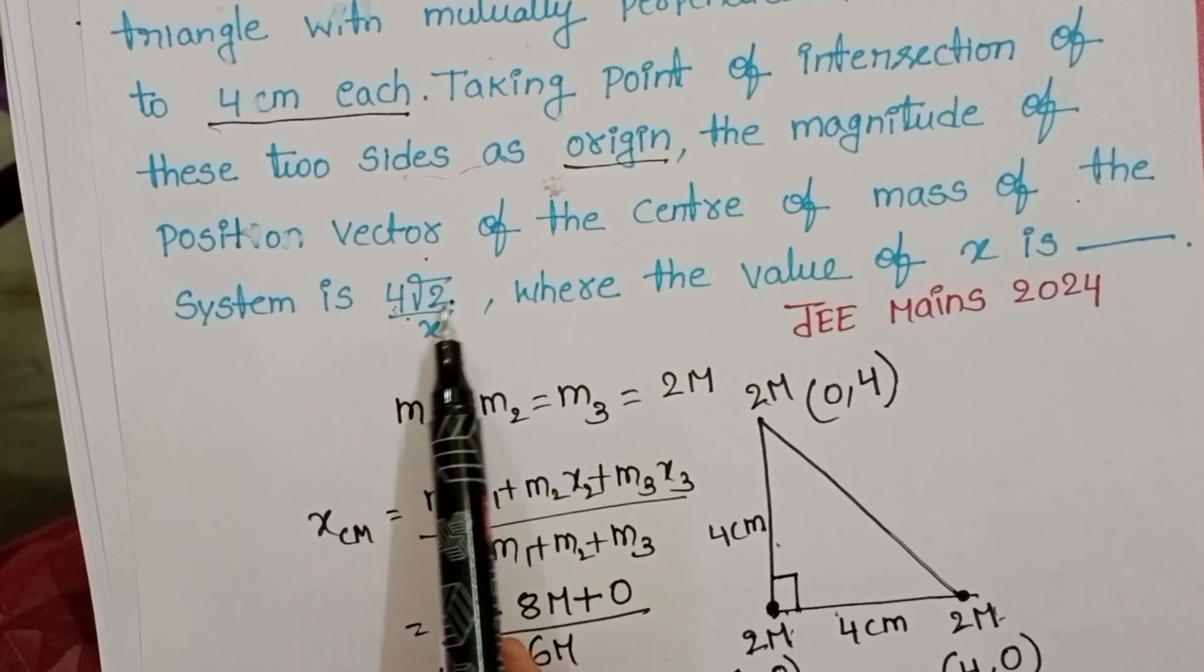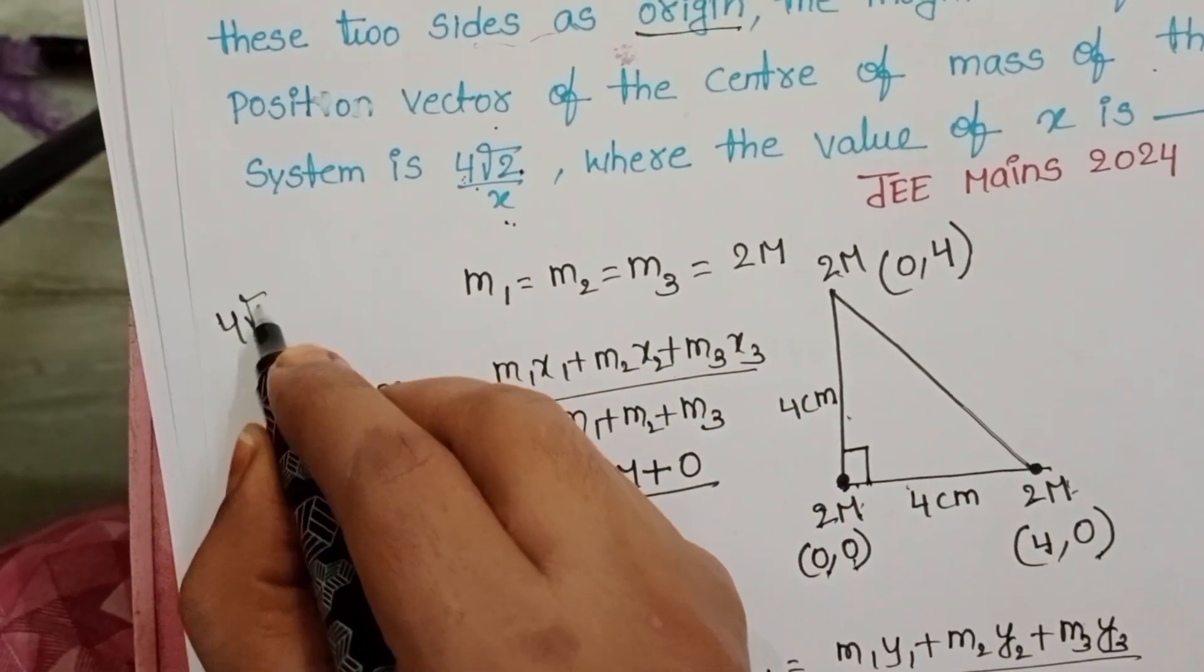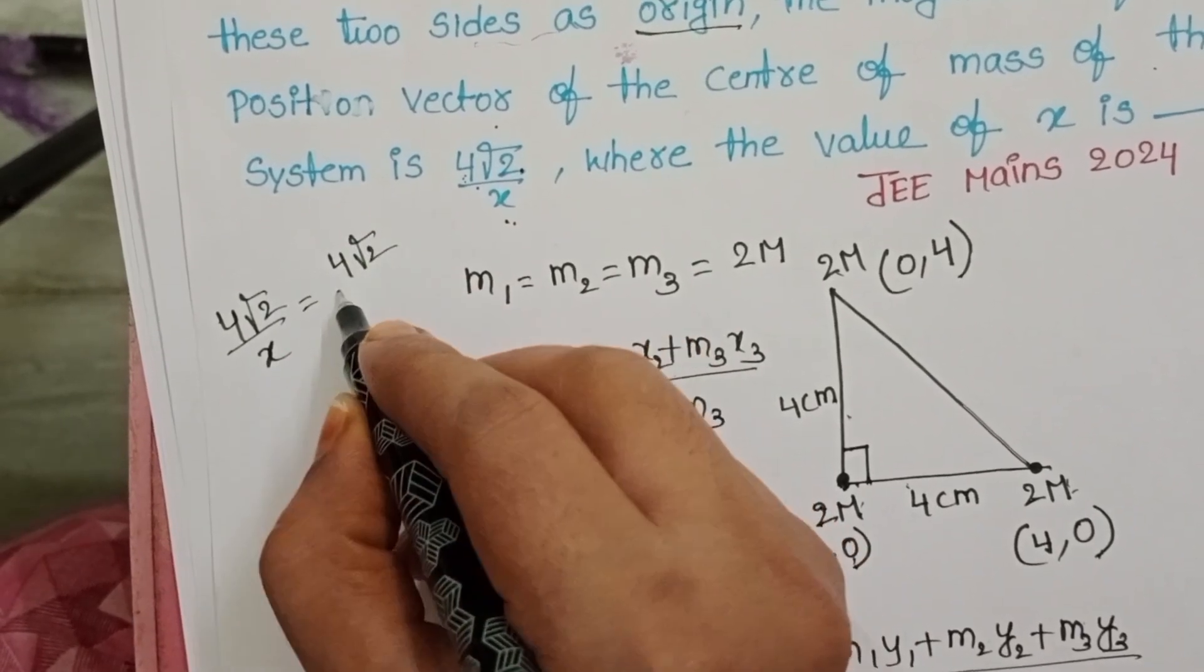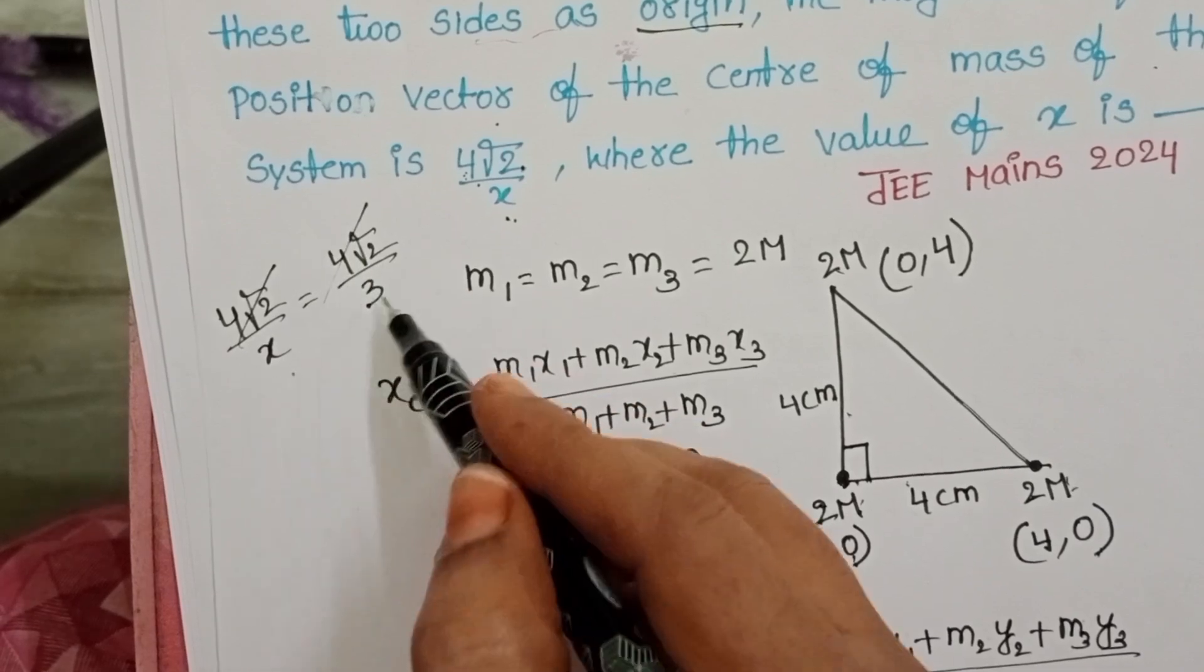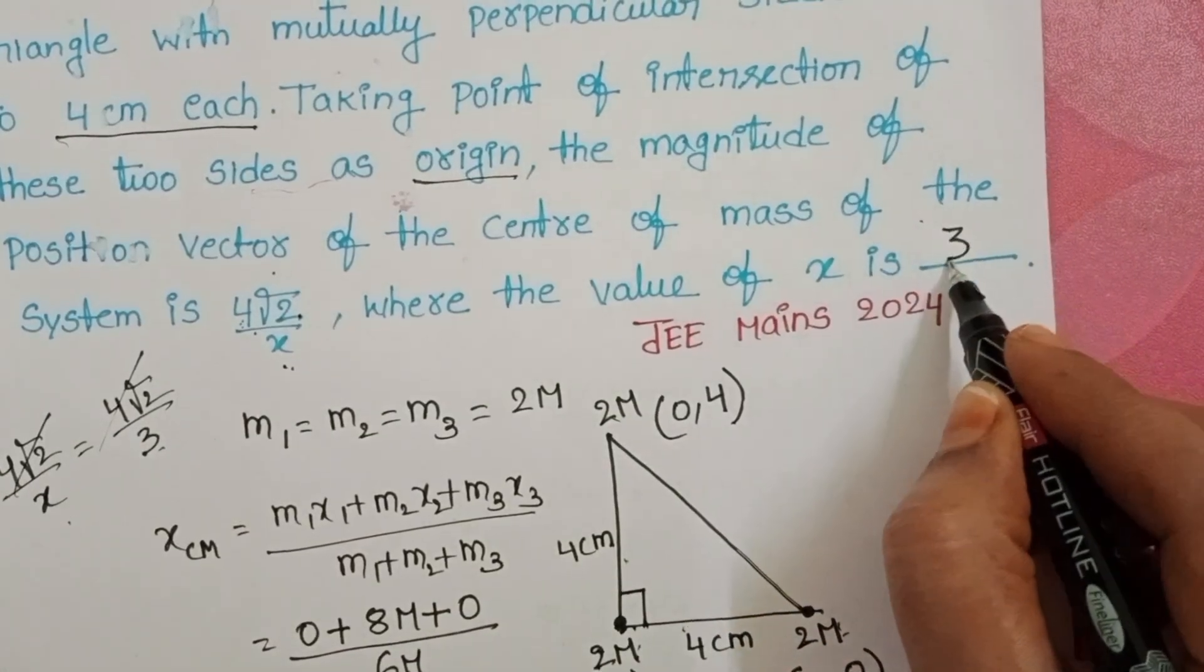The magnitude of position vector of the center of mass of the system is 4 root 2 by x. 4 root 2 by x is equals to 4 root 2 by 3. The value of x is equals to 3. Your answer is 3.